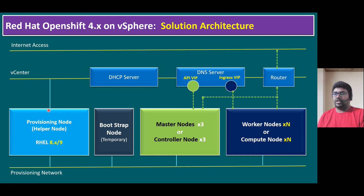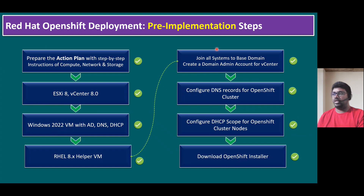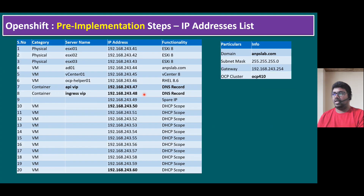Until now, we did the pre-implementation step and post-implementation step, and we established the trust between vCenter and Helper VM. Now I'm going to create an install-config.yaml file on Helper VM. This is a pre-implementation step. In this install-config.yaml file, we require two IP address static DNS record IPs.